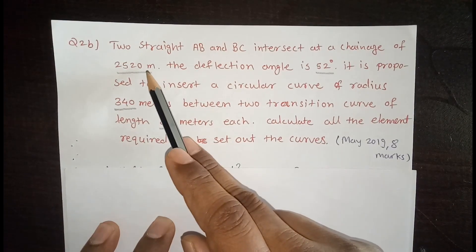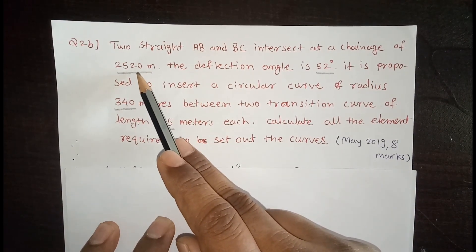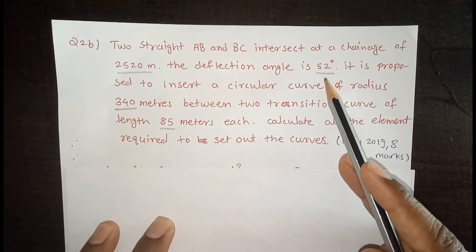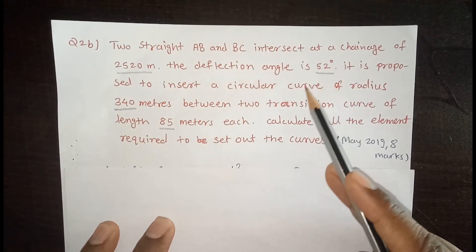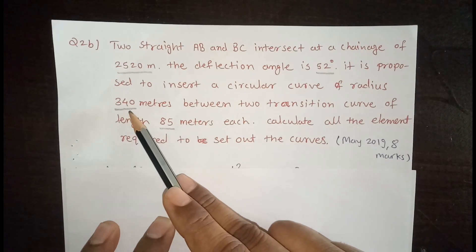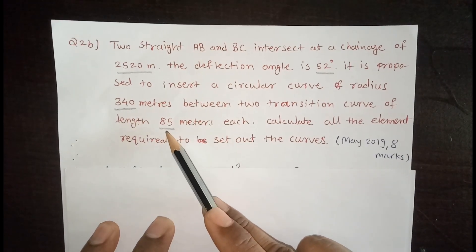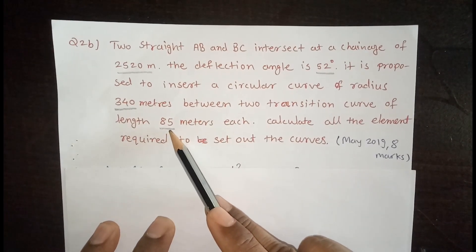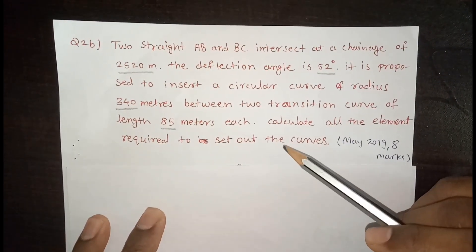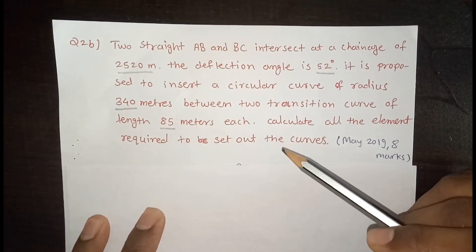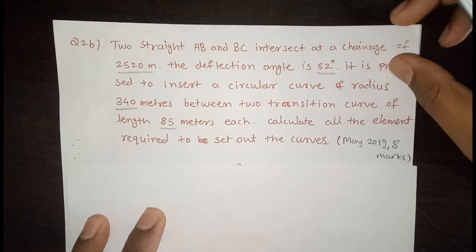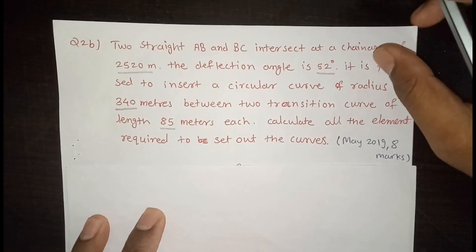The chainage at the intersection is 2520 meters. The deflection angle is 52 degrees. The radius of the circular curve is 340 meters, and the length of the transition curve is 85 meters. The peg interval is not given, so we can consider 20 or 30 meters. Here I have considered a 20-meter peg interval.